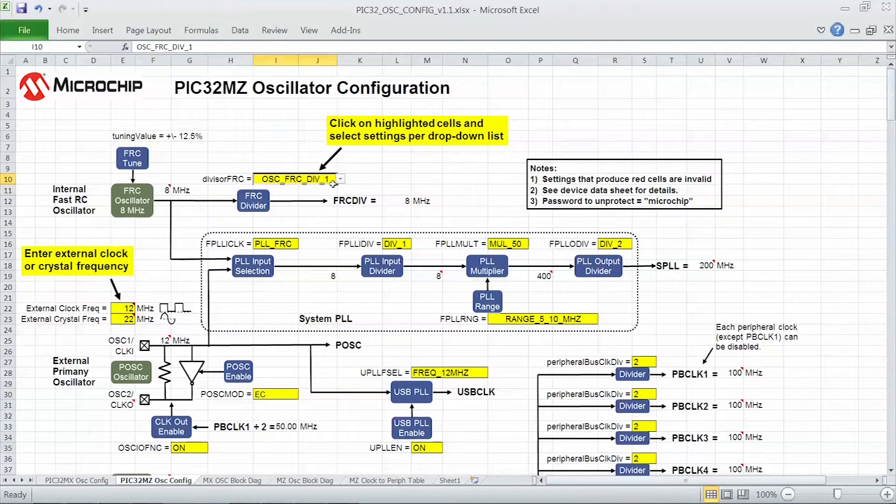You'll note as you change the settings, the corresponding output frequencies are affected. All input clock sources are shown in the green blocks on the left.